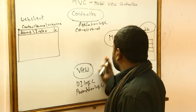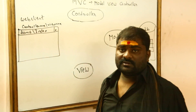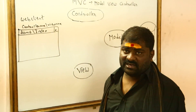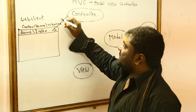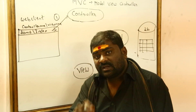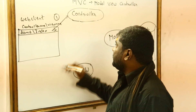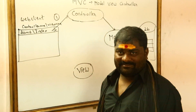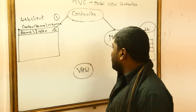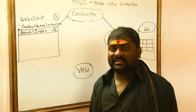Now let's see how the code flows in MVC. Whenever the user types a request in the URL, the controller will respond to the user request — that is step number one. The controller will then forward that request to the model — step two. The model will then interact with the database — step three.